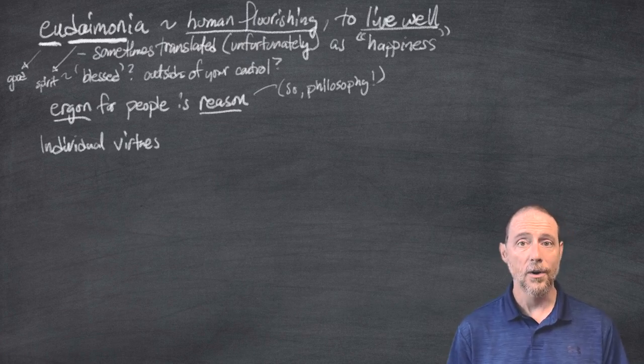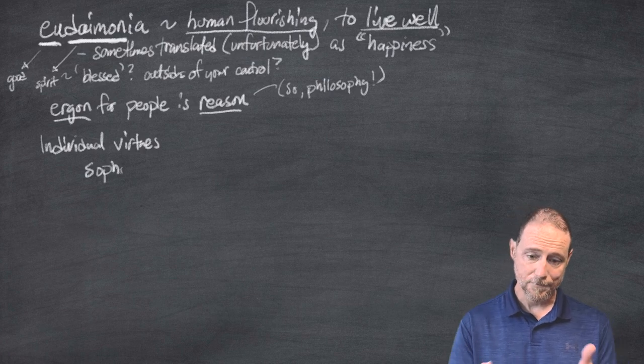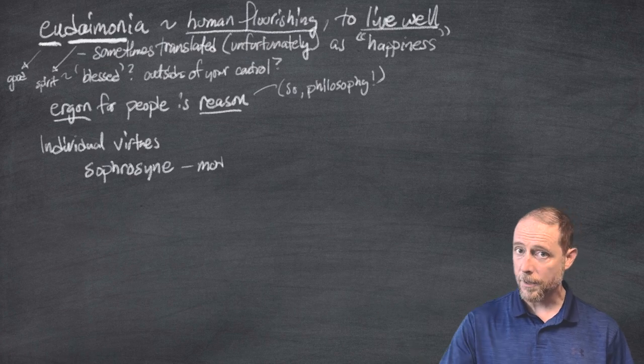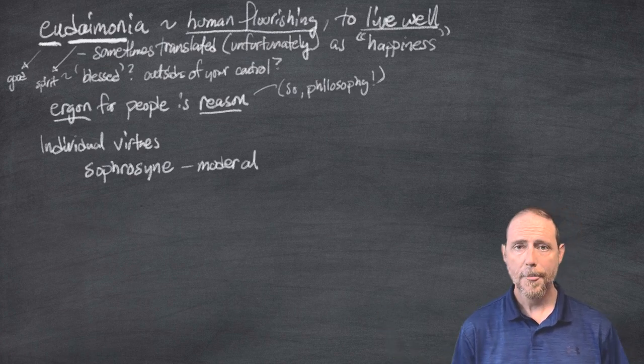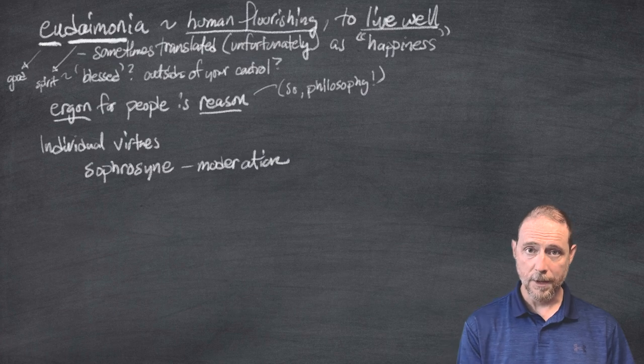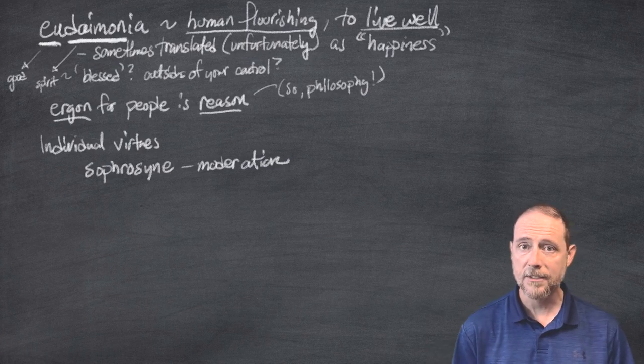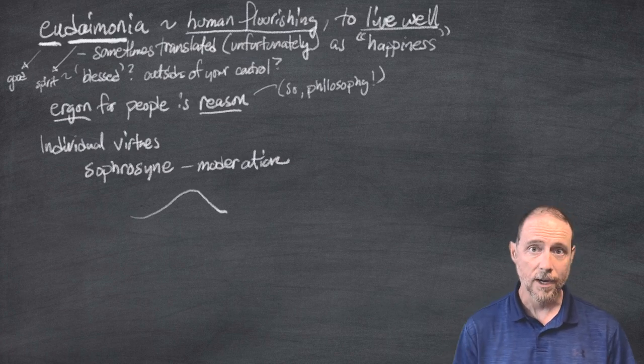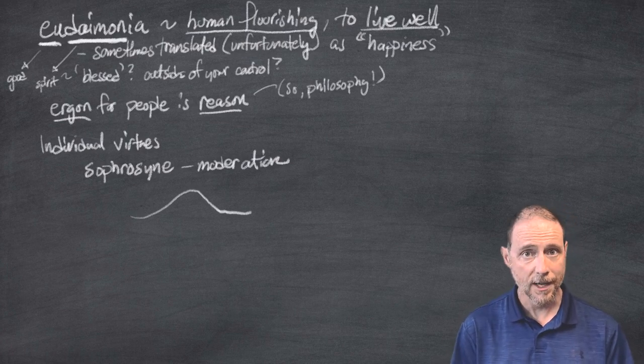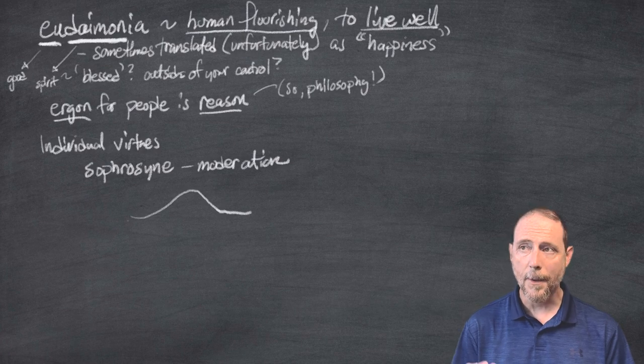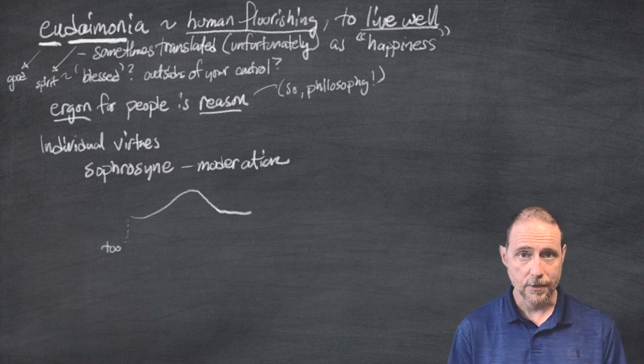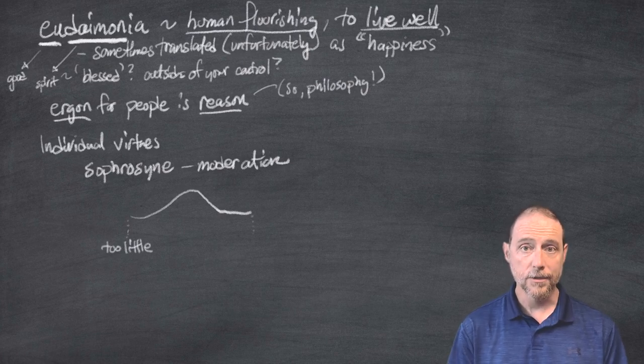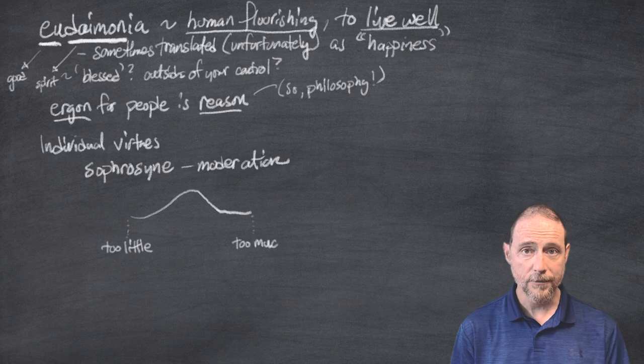Aristotle discusses all of the different virtues as being kind of midpoints, where it's possible to have too little and equally well, it's possible to have too much. That's not normally something that we think. When we normally think about the virtues, we think about something that is good. And obviously, if it's good and it's a virtue, I want to have more of it. I want to maximize it. I want to have as much of the virtue as I possibly can. But for Aristotle, it's not about maximizing something. It's about balancing something. And the balance, the moderation of that virtue, the sophrosyne, is where the virtue is to be found.